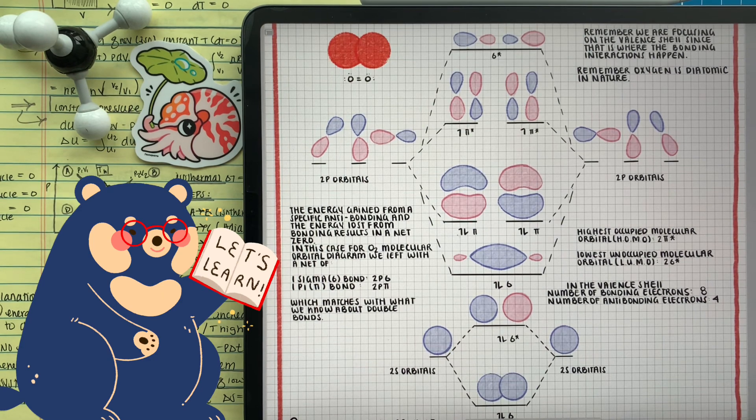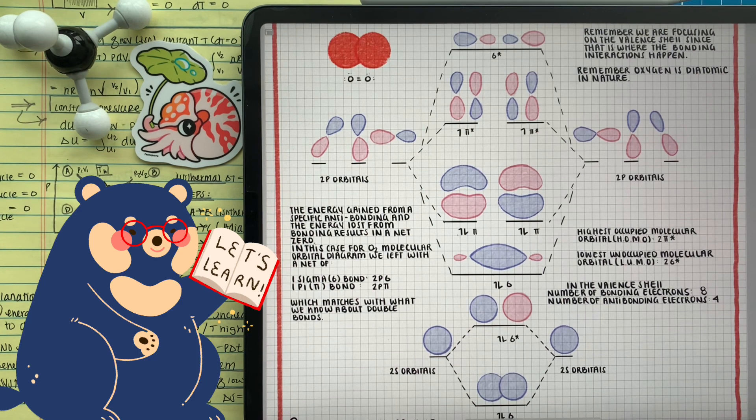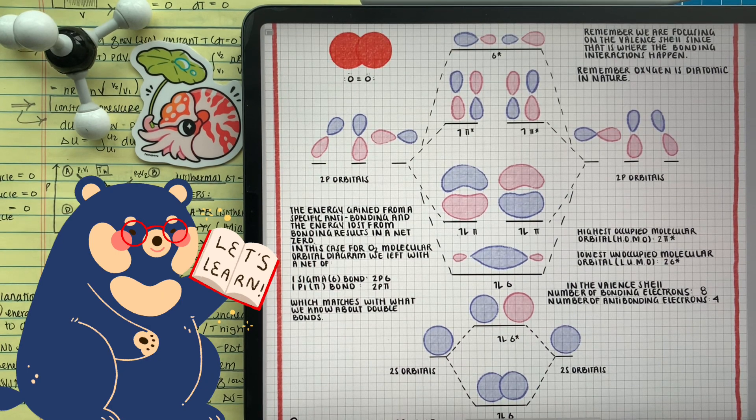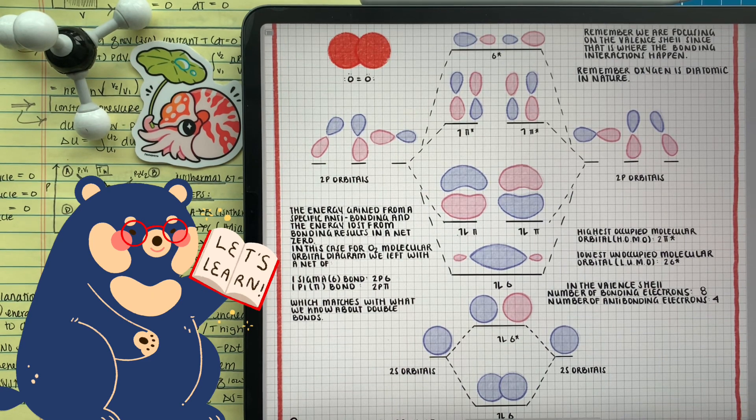Now we have to look at how the p orbitals are interacting. There's no electrons in the anti-bonding sigma bond. So we're definitely going to keep that one sigma bond between the two p atomic orbitals. But it gets pretty interesting when we look at the pi bonds.